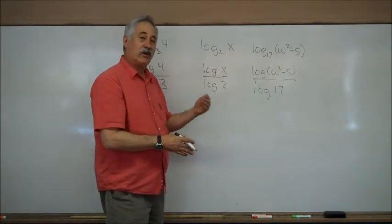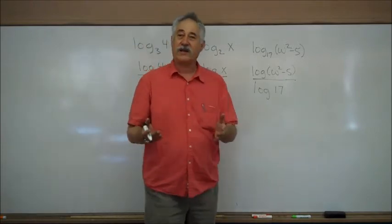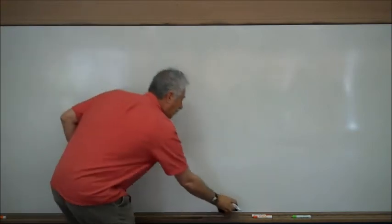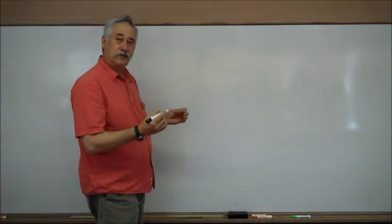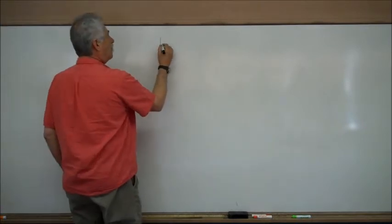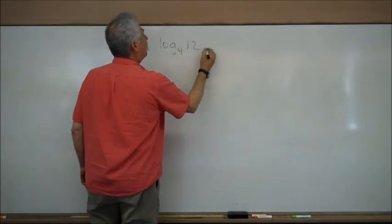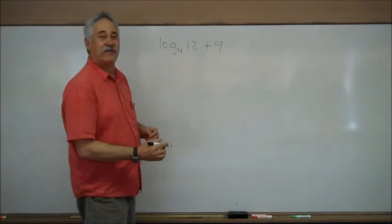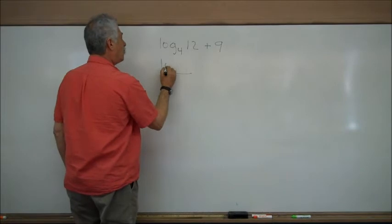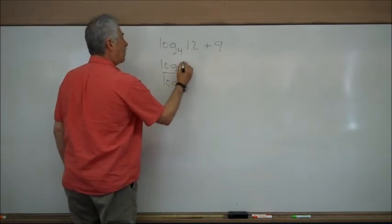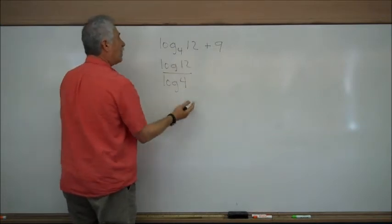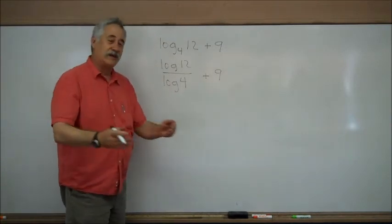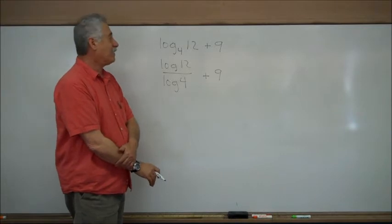Now, how can this be made to look harder? How can it be made to fool you? One way a book or teacher might try to fool you would be to give you something like: logarithm base 4 of 12, plus 9. You might say there's a plus 9, I can't do the problem. Draw a fraction bar, two logarithms. The logarithm of 12 is on top, it stays on top. 4 is lower, it stays lower. What about the plus 9? There it is — you just carry it along. You're done.